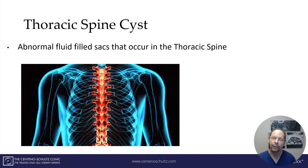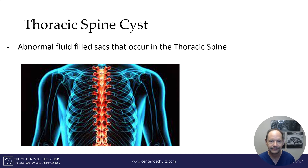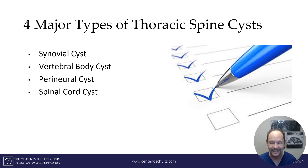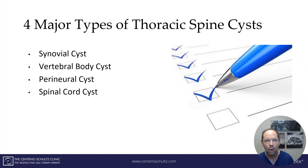A thoracic spine cyst is an abnormal fluid collection that occurs in the thoracic spine. There are four major types of cysts you need to know about: the synovial cyst, a vertebral body cyst, a perineural cyst, and a spinal cord cyst.